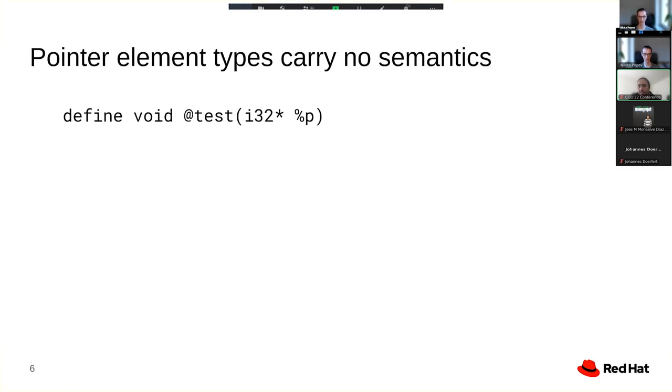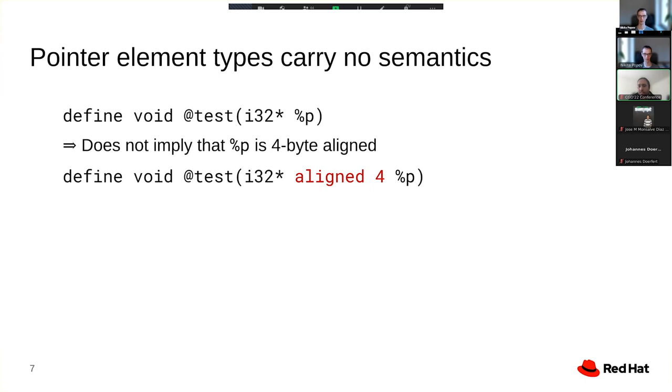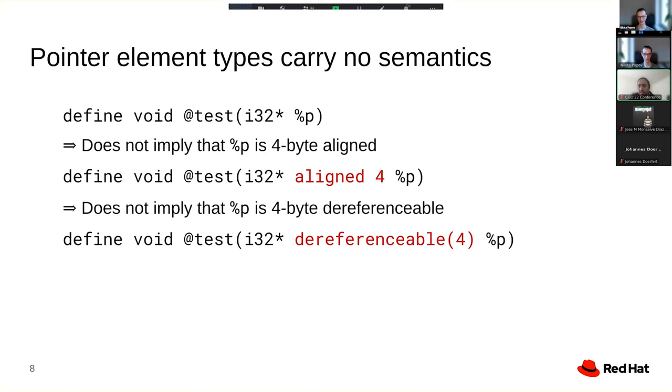Here we have a function accepting a pointer to i32, and what does that actually mean? It doesn't mean that the pointer is 4-byte-aligned, because for that we have a separate align annotation. It doesn't mean that the pointer is 4-byte-dereferenceable, because once again, we have a separate annotation for that. It doesn't imply that there are any particular aliasing semantics in place.